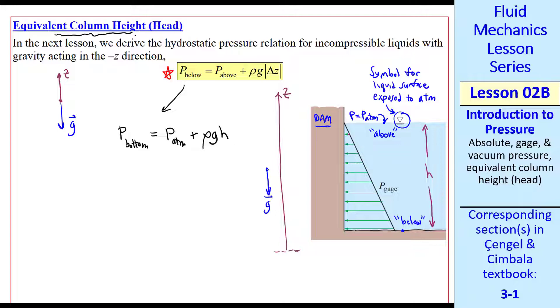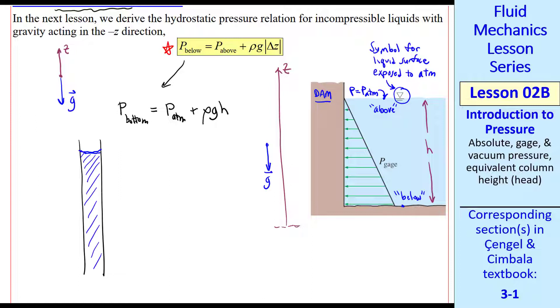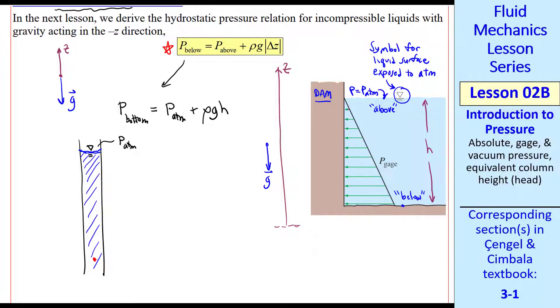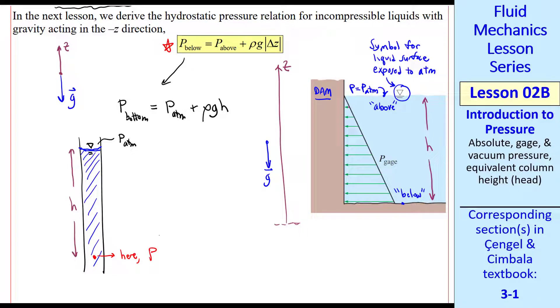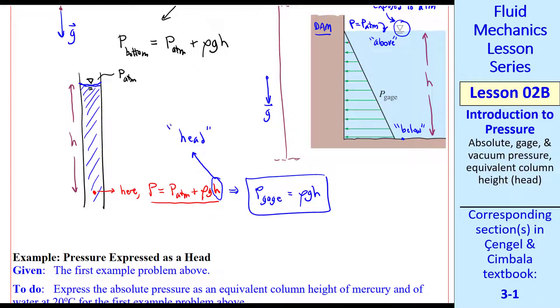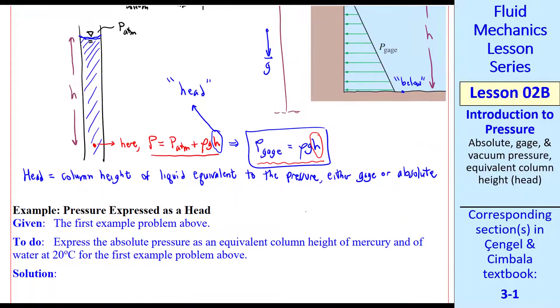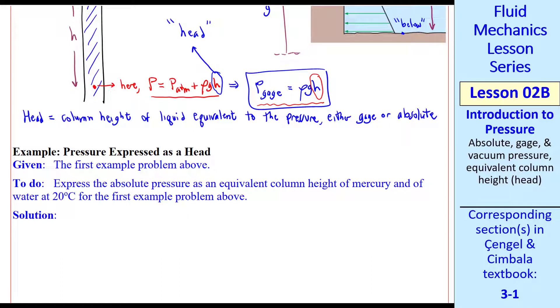This is where the concept of equivalent column height comes in. If we have a tube filled with water, up to some level, where the surface is exposed to the local atmospheric pressure, and we're looking at some point here. If we call this distance H, the pressure at this point is P atmosphere plus rho G H, just like it was in this case. The gauge pressure, by definition, then, at this point is just rho G H. We sketch gauge pressure here. This column height H is called the head. Formally, head is the column height of liquid, equivalent to the pressure, and it can be used for either gauge pressure or absolute pressure. Here we're using H as a gauge pressure equivalent. This is why sometimes you hear people say the pressure is 15 meters of water.